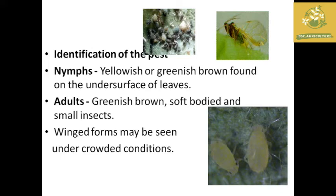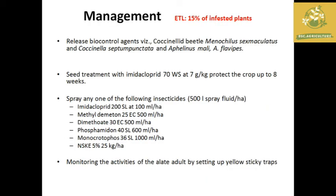For identification, the nymph is yellowish or greenish brown in color with a soft body. The winged form can be found under crowded conditions when there is no food supply. The economic threshold is 50% infested plants. Bio-control agents such as Coccinellid beetles and insects are artificially released.